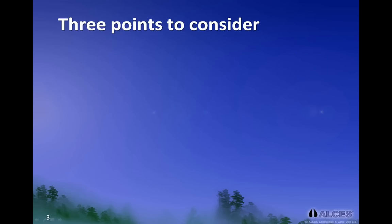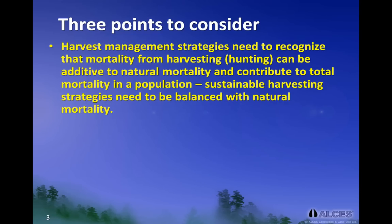In summary, there are three main points to consider when we look at northern wildlife populations and harvest management issues. Firstly, harvest management strategies need to recognize that mortality from harvesting, hunting, and trapping can be additive to natural mortality and contributes to total mortality in a population. Sustainable harvesting strategies need to be balanced with natural mortality so that total mortality does not cause the population to decline below a targeted level.